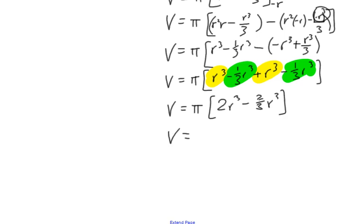And that becomes 2 take away 2 thirds is 1 and 1 third, or 4 thirds. And so we end up with π times 4 thirds r³, or as we normally write it, V equals 4 thirds π r³.